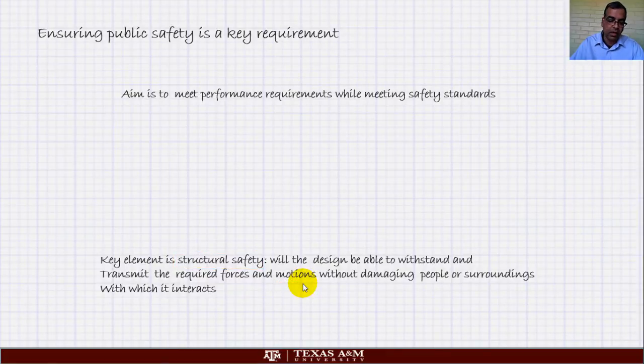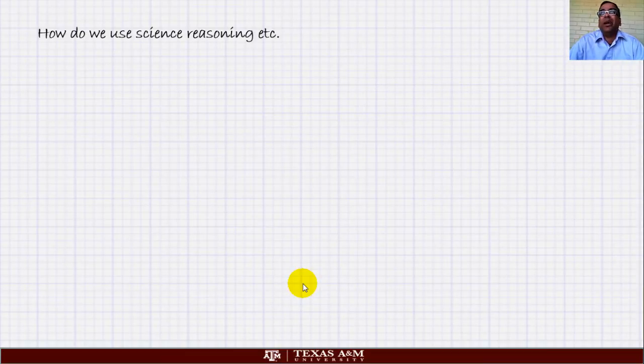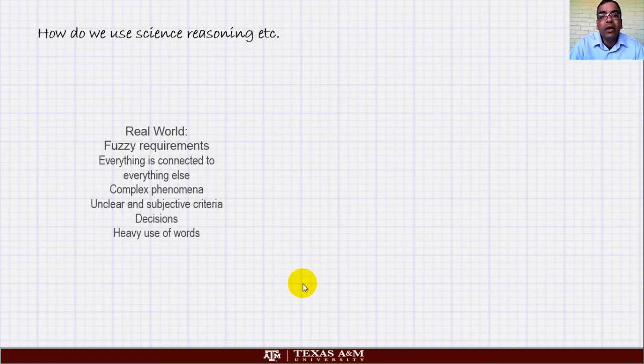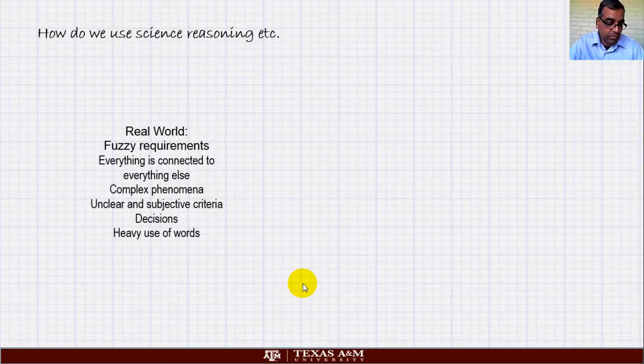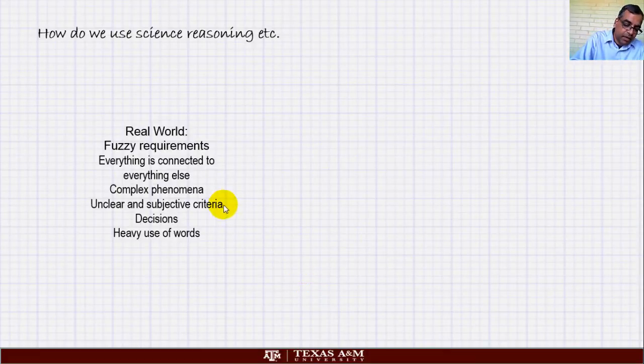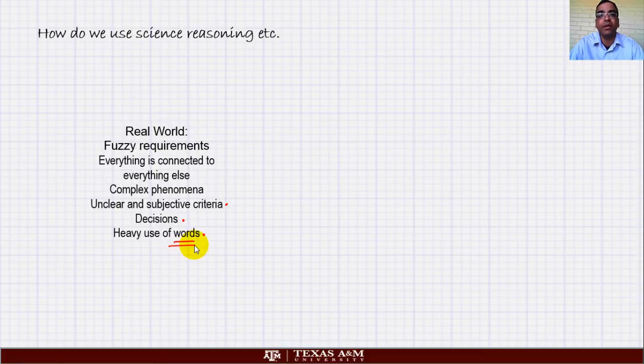Now comes the question of where does science come in? The idea is the following. Real world requirements are very fuzzy. People have lots of different things and everything is connected to everything else. For example, the wheelchair lift has to be connected to the bus which is connected to the ground. It's very hard for you to figure out what system we are designing. There are lots of complicated things that can happen. There are unclear and subjective criteria. There are decisions that have to be made and there is heavy utilization of verbal communication. Verbal is very important, and that's one of the things that create problems because people don't exactly mean what they say.